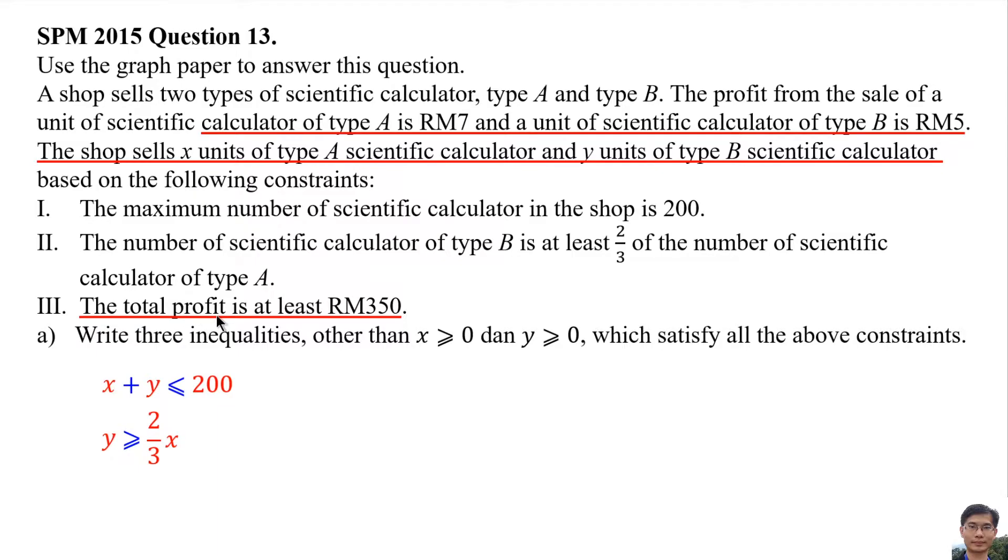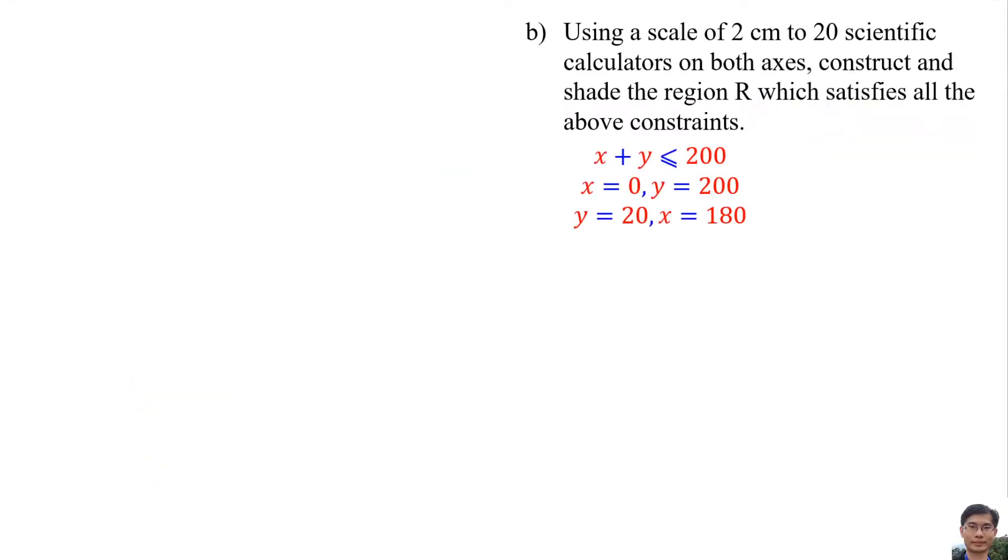The total profit means the profit of x units of Type A is 7x plus the profit of y units of Type B scientific calculator means 5y, at least means more than or equal 350. And when y is 0, x is 50, then we plot all the points on the graph and draw the 3 lines.